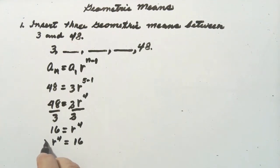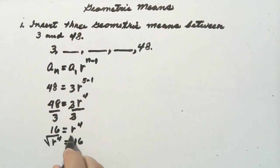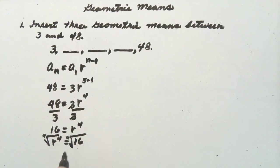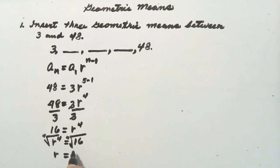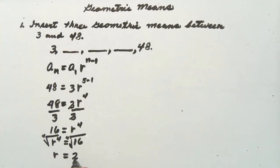Extract the fourth root of both sides. The fourth root of r raised to the exponent of 4 is r, because if you multiply r 4 times by itself you will get r raised to the exponent of 4. And the fourth root of 16 is equal to 2, because if you multiply 2 four times by itself you will get 16.